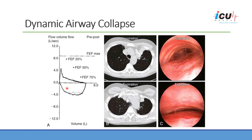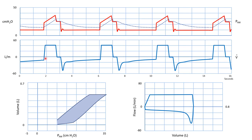On the CT scan you can appreciate complete collapse of the lower trachea during expiration compared to inspiration. Dynamic bronchoscopy reveals similar findings and confirms that the collapse is caused by flattening of the anterior tracheal wall, which characterizes the crescent type tracheomalacia.